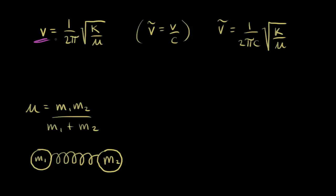In the last video we saw that the frequency of bond vibration can be thought about like a spring oscillation, and so it's dependent on two things: k, which is the spring constant or the force constant, and the reduced mass, where the reduced mass is equal to m1 times m2 over m1 plus m2. Here's your bond as a spring with m1 and m2 on either end.